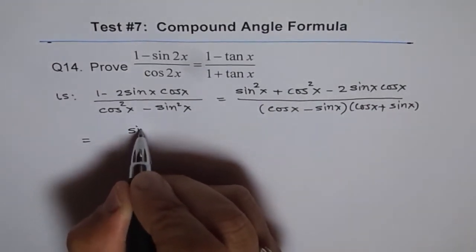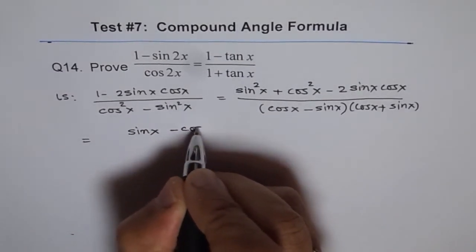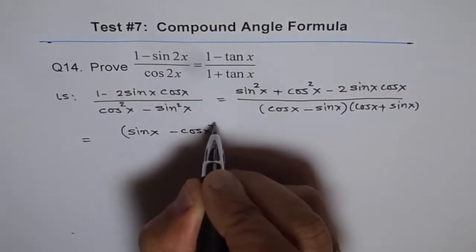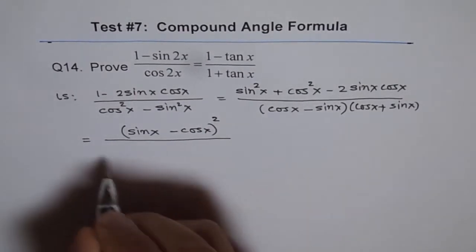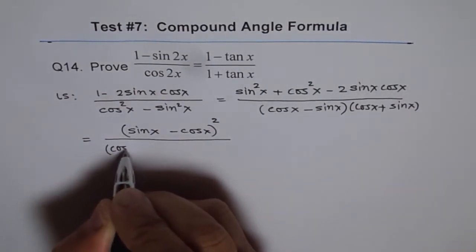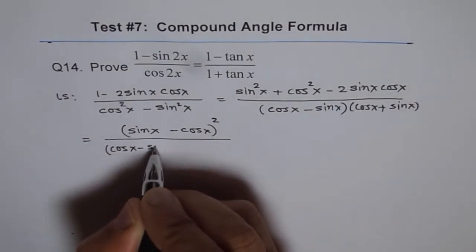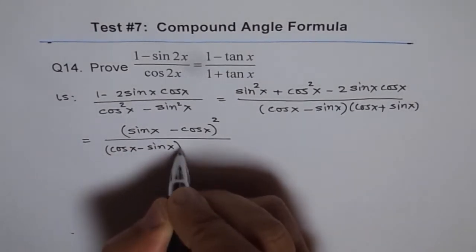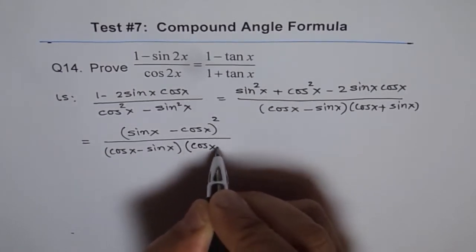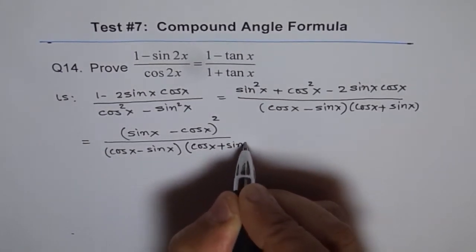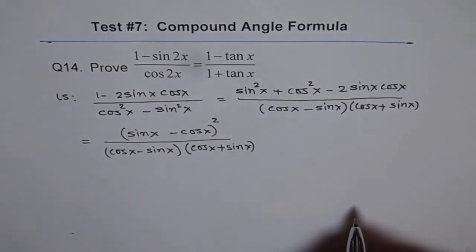So the numerator can be written as sine x minus cos x, whole squared, divided by cos x minus sine x times cos x plus sine x.